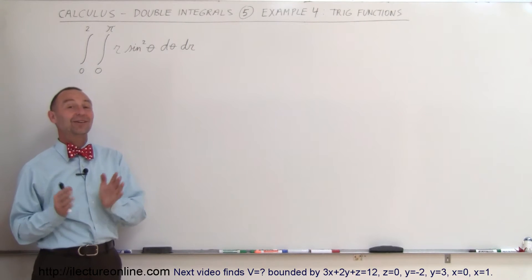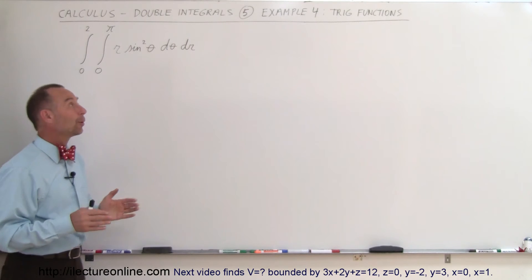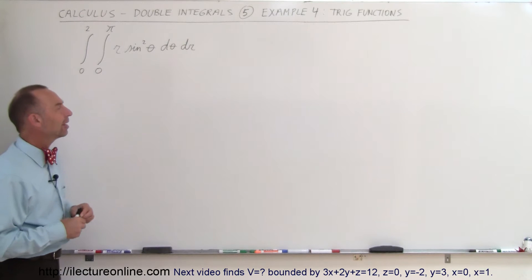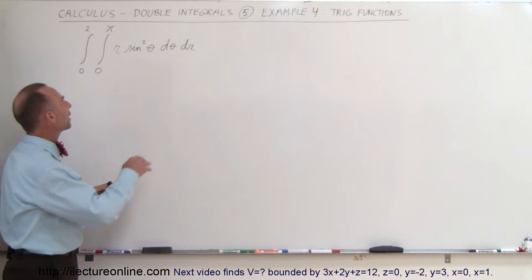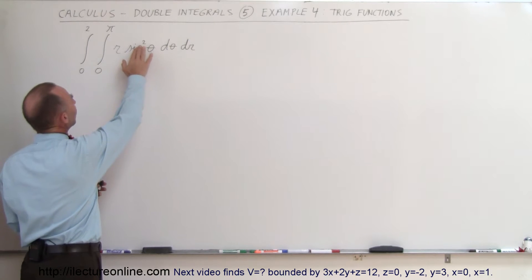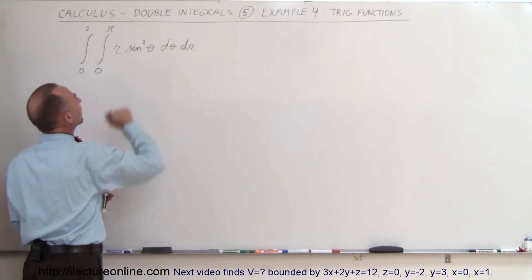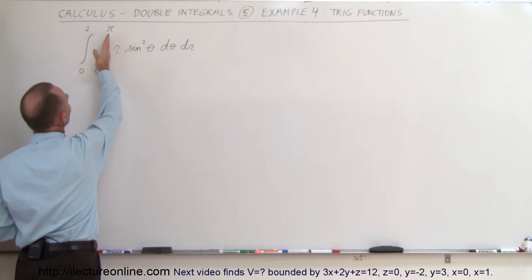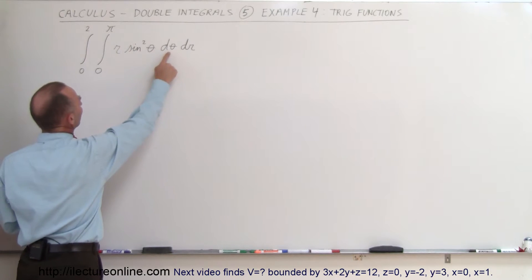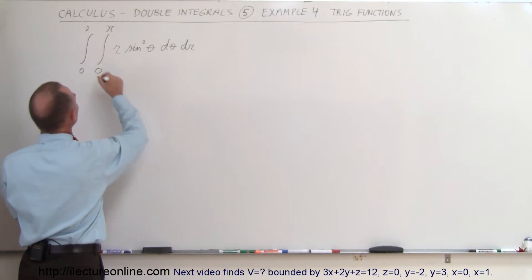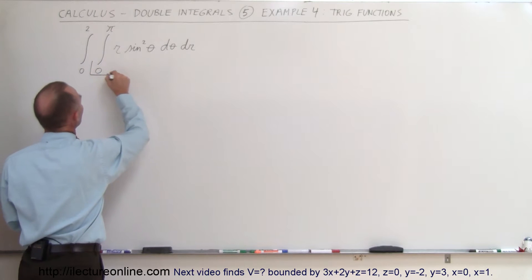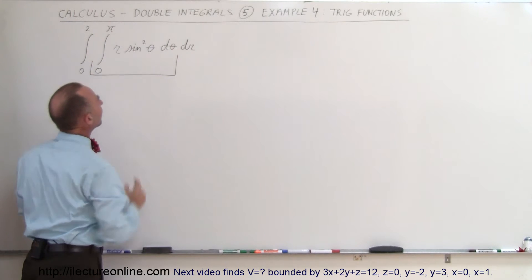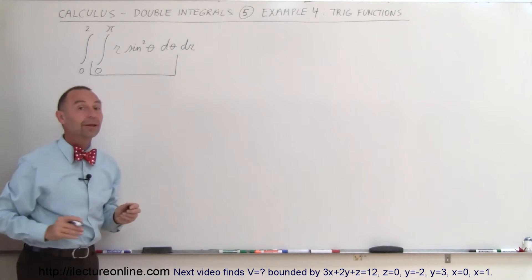Welcome to ElectronLine. In our next example, we're going to do another trig function, a little bit more complicated in this case. What we have here is the double integral of r times sine squared of theta, d theta dr, and I have my theta limits because I'm going to integrate over d theta first. We're going to integrate over the variable theta.